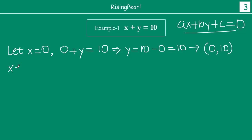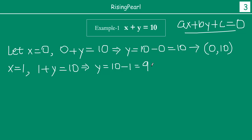How about x equal to 1? If we put x equal to 1, this becomes 1 plus y equal to 10, which implies y is equal to 10 minus 1, which is 9. So we can see that x=1, y=9: 1 plus 9 is 10, and the right hand side is 10. So (1, 9) is again a solution to our linear equation.